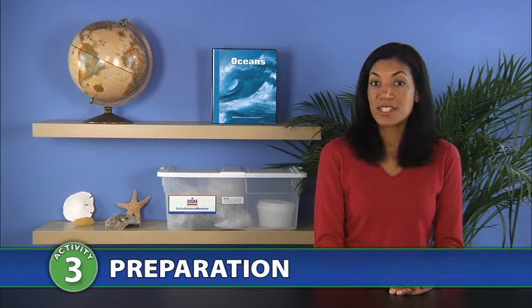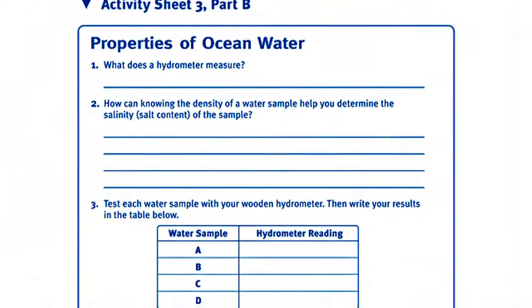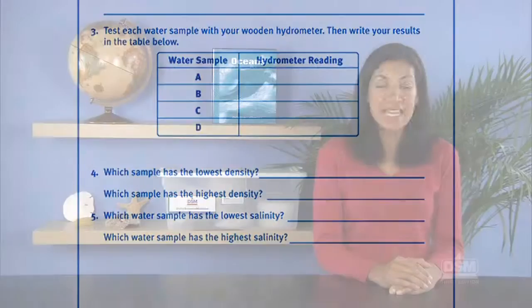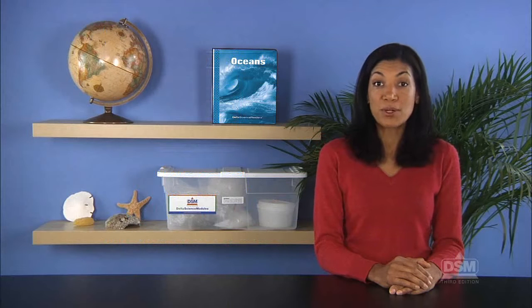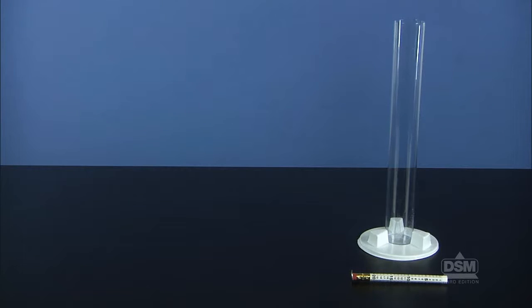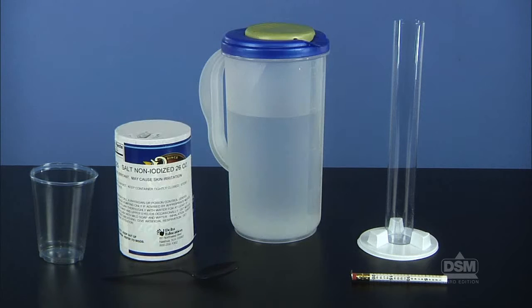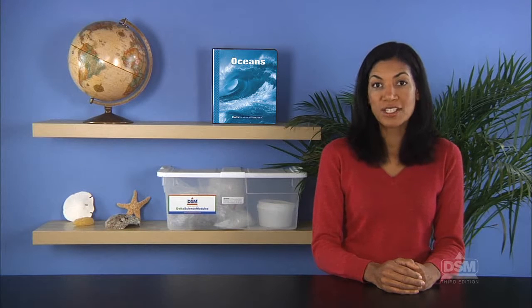To prepare for Session 2, make a copy of Activity Sheet 3, Part B for each student. To demonstrate how a hydrometer works, you will need an assembled wooden hydrometer, a plastic tube, a plastic cup, some tap water, table salt, and a spoon. Prepare 4 water samples ahead of time so that the water is clear.